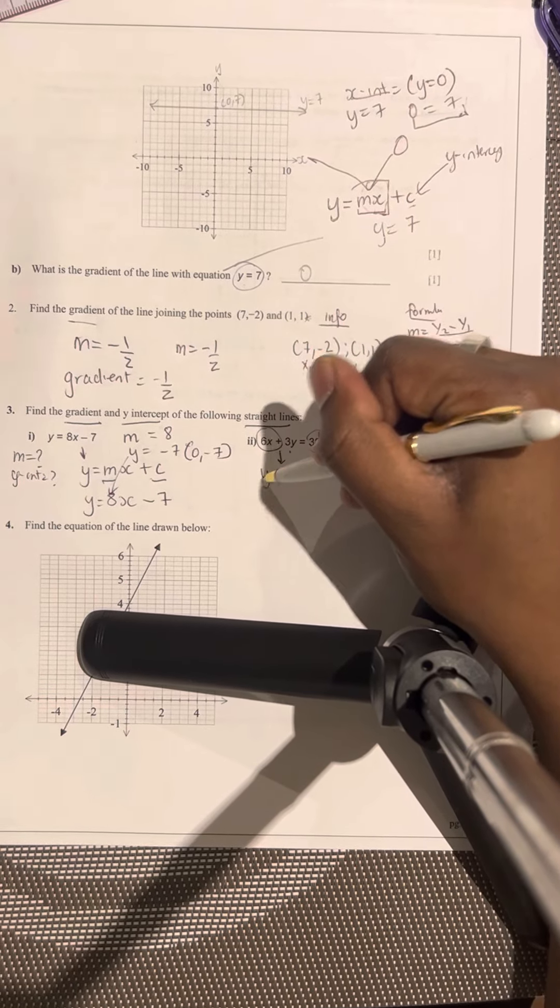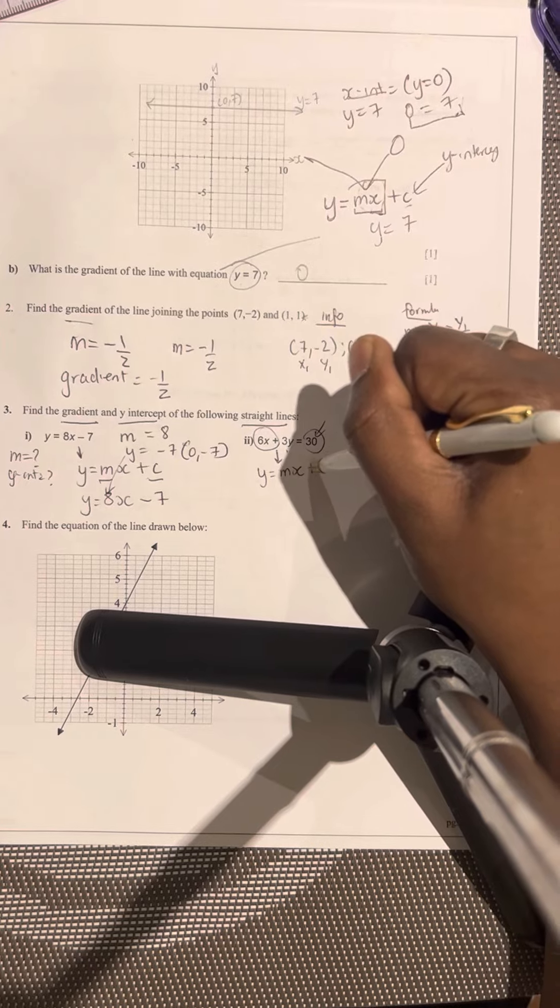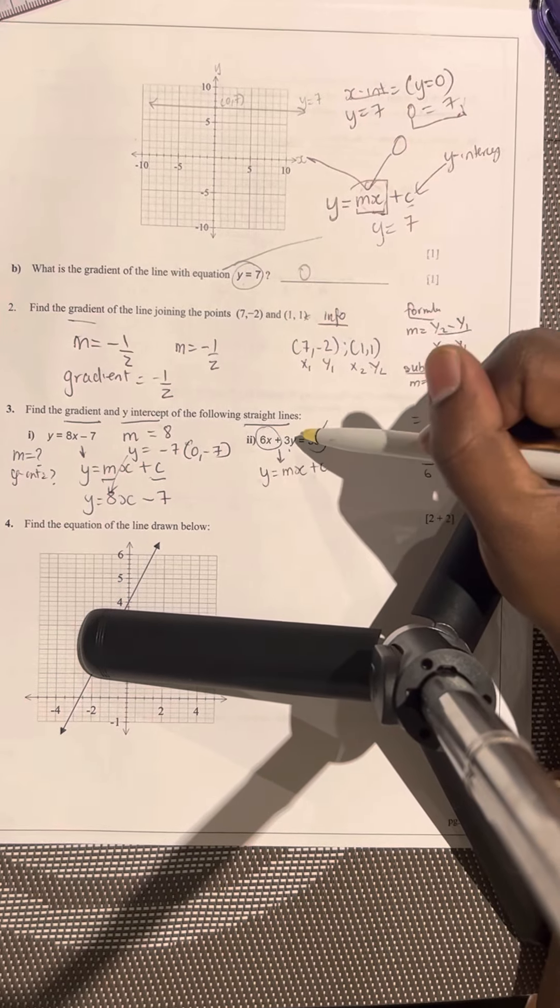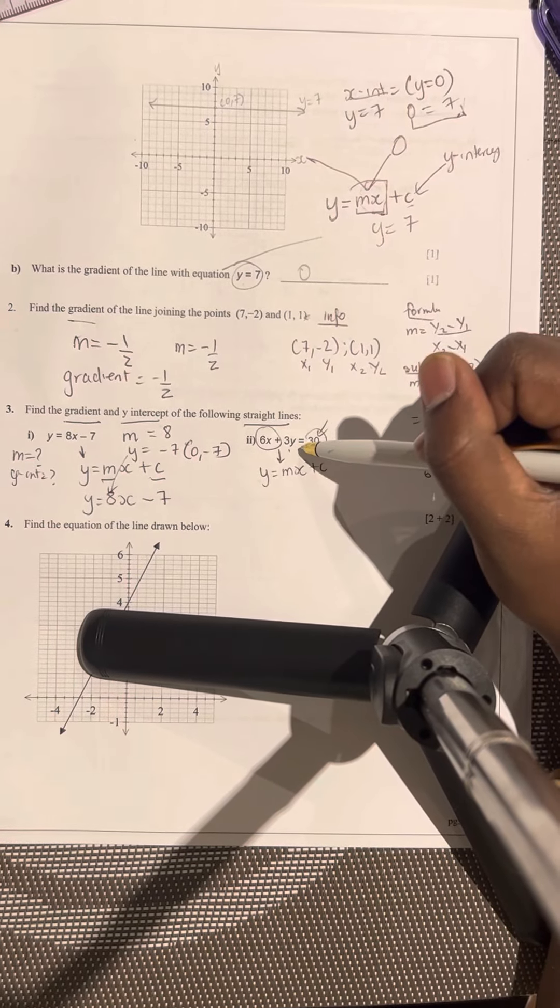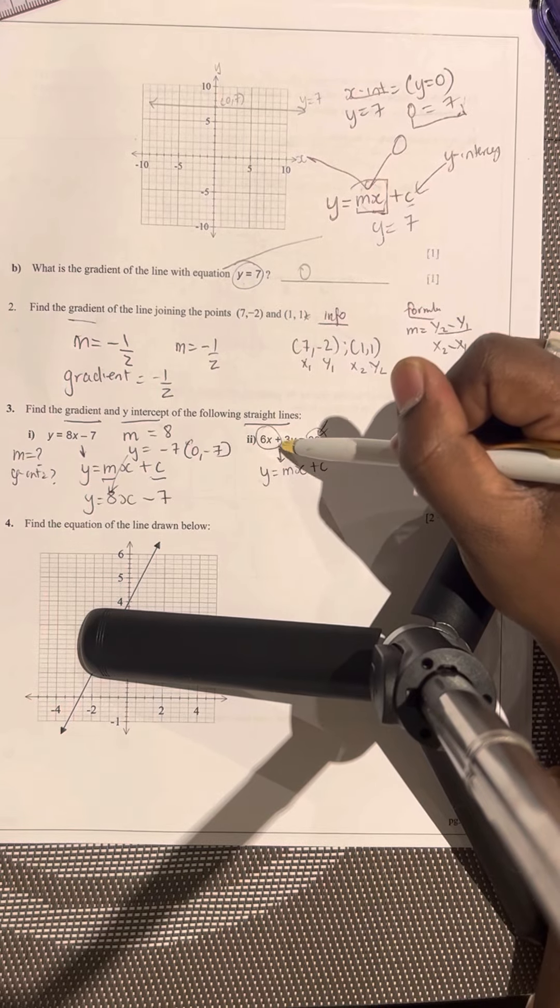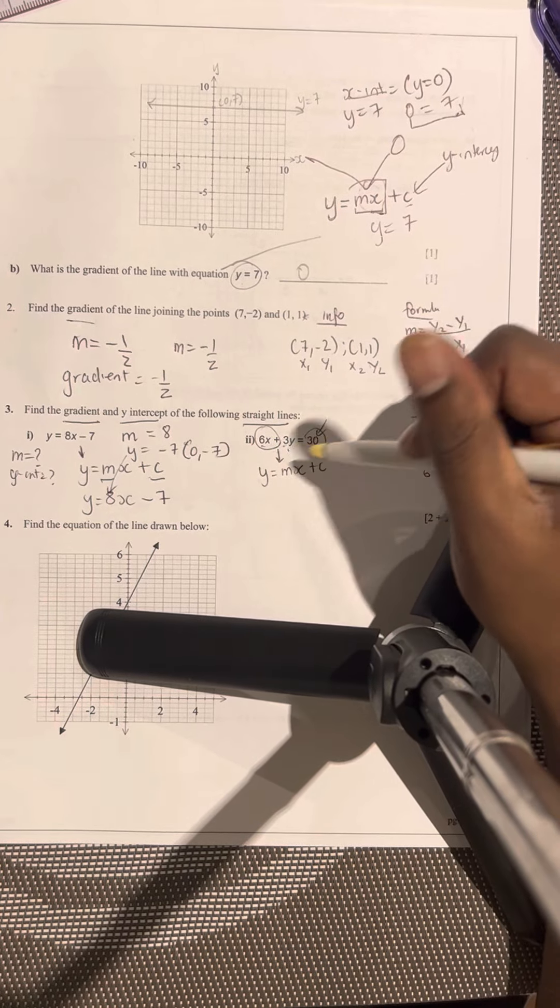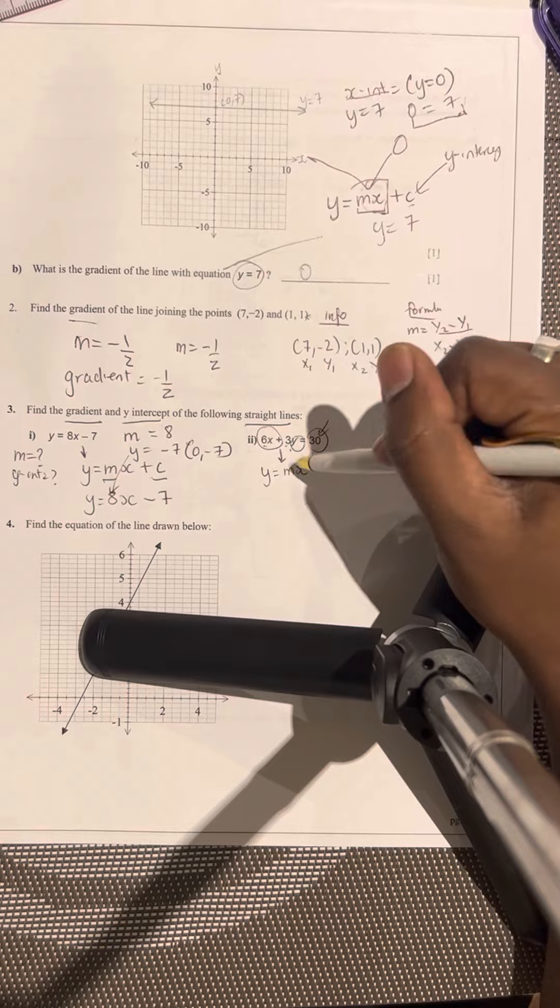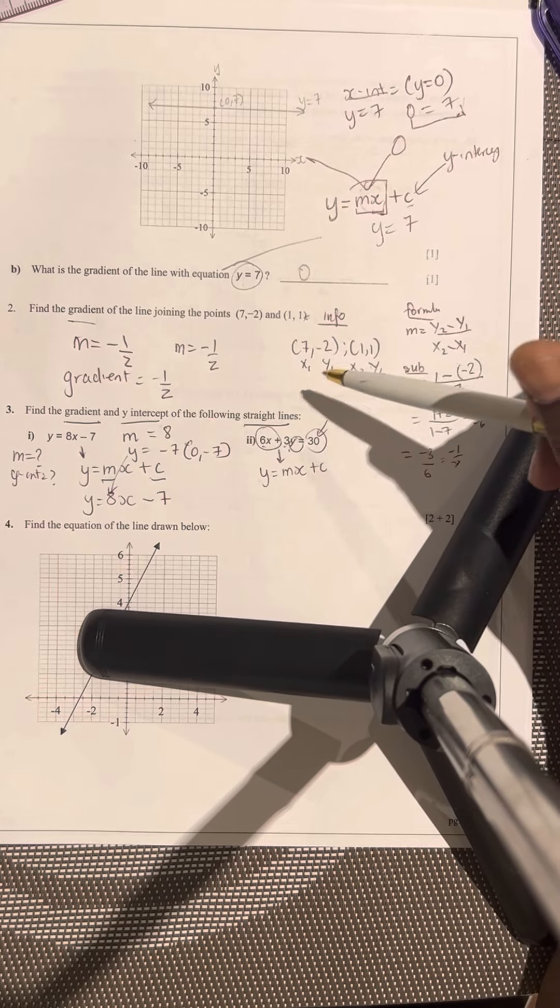What's the equation of the line? y equals mx plus c. Right, is there anything bothering the y? Yeah, there's actually a 3 on this side and there's also a 6x. So we need to solve for y. What does that even mean? Solve for y.